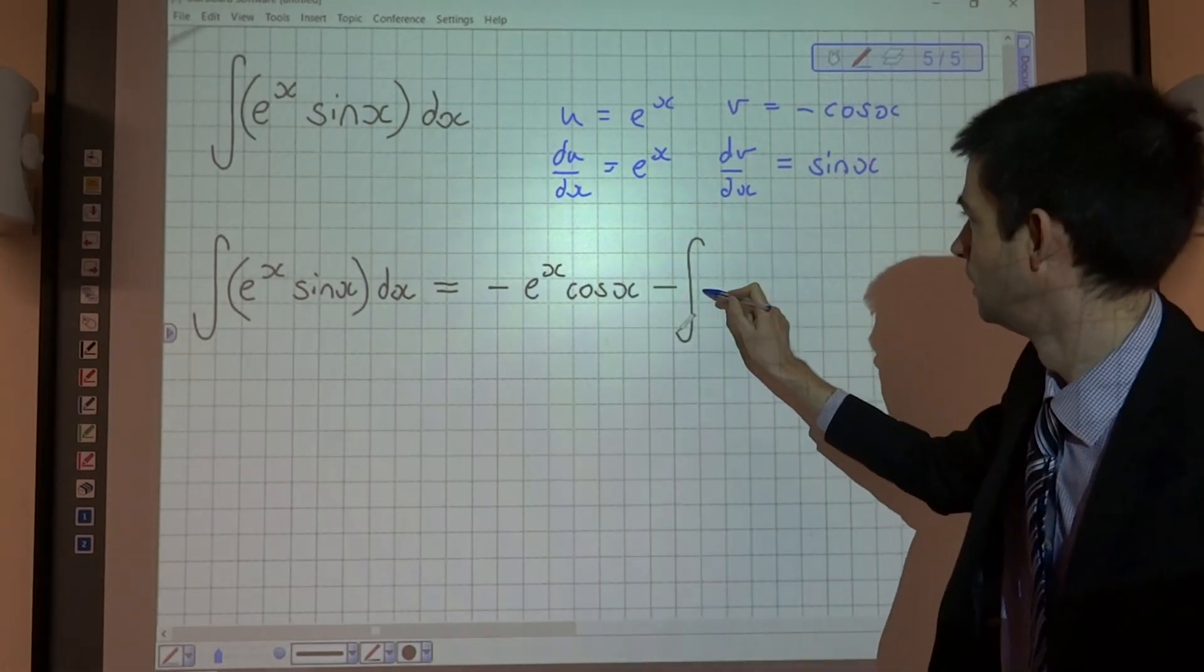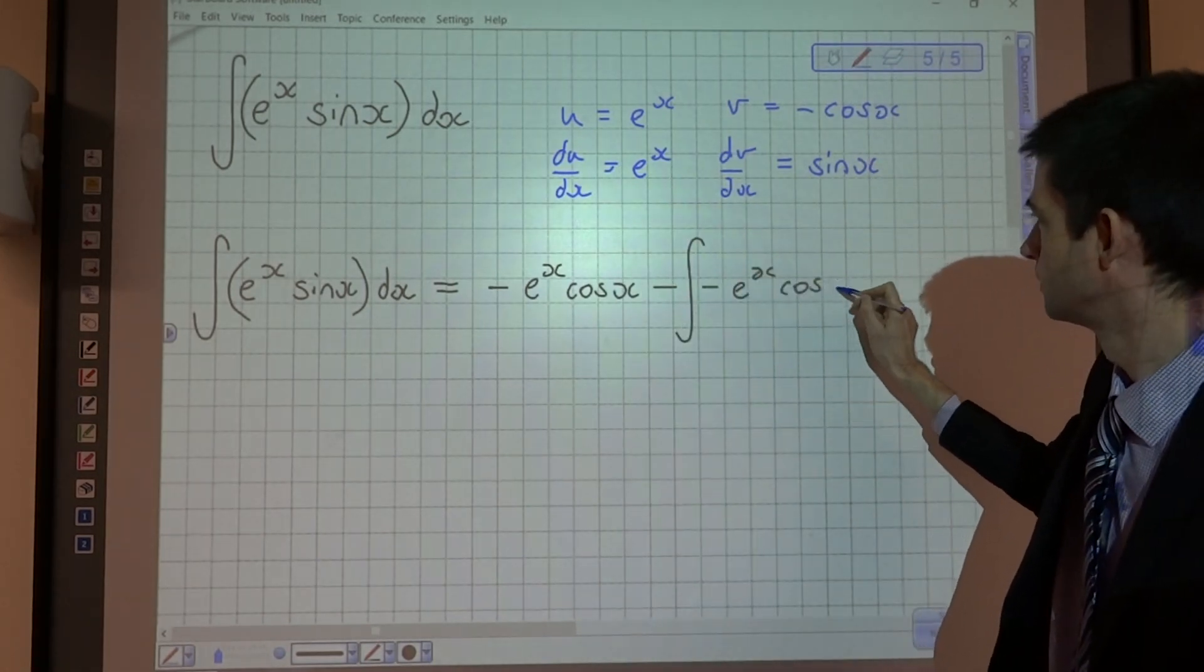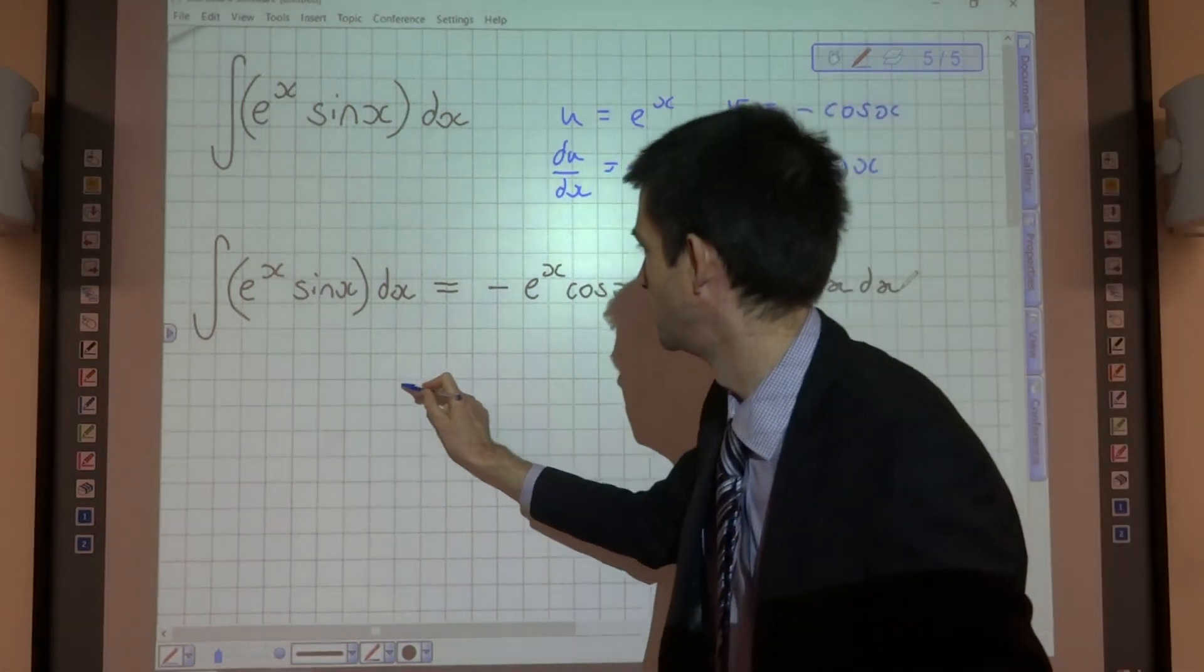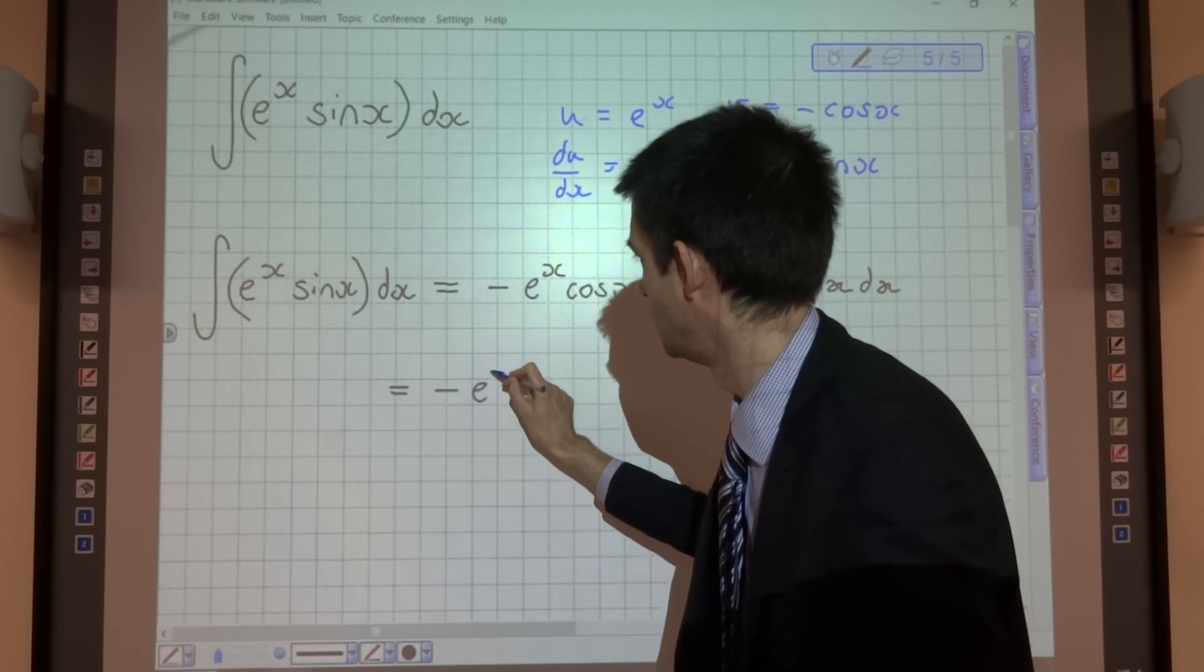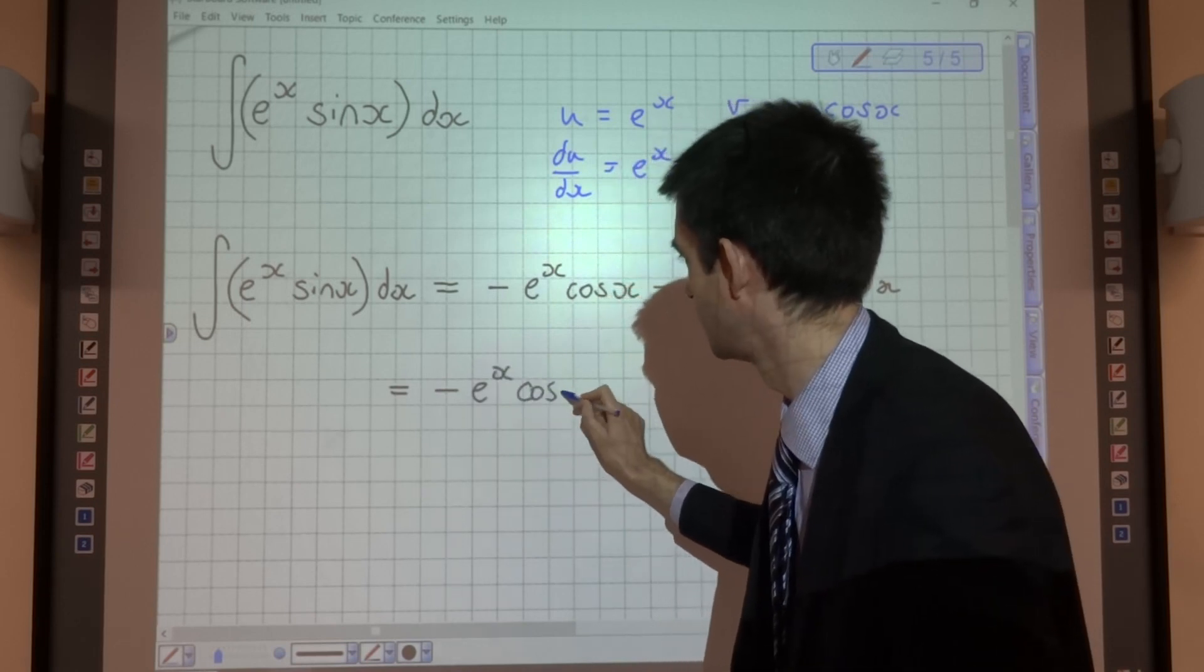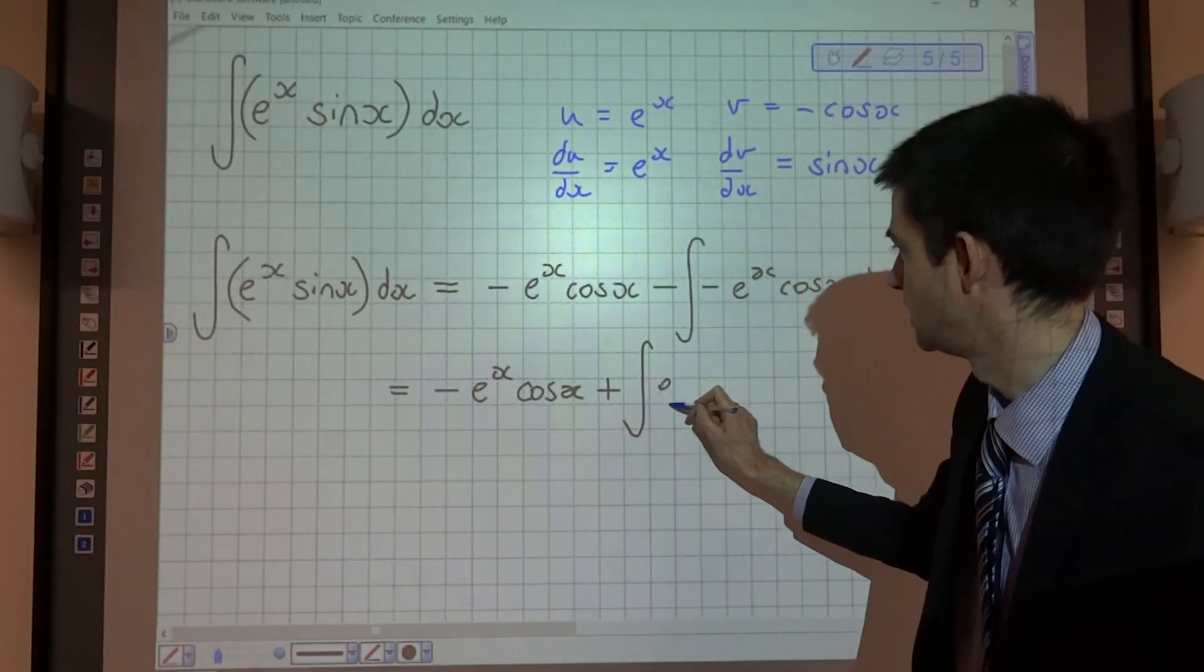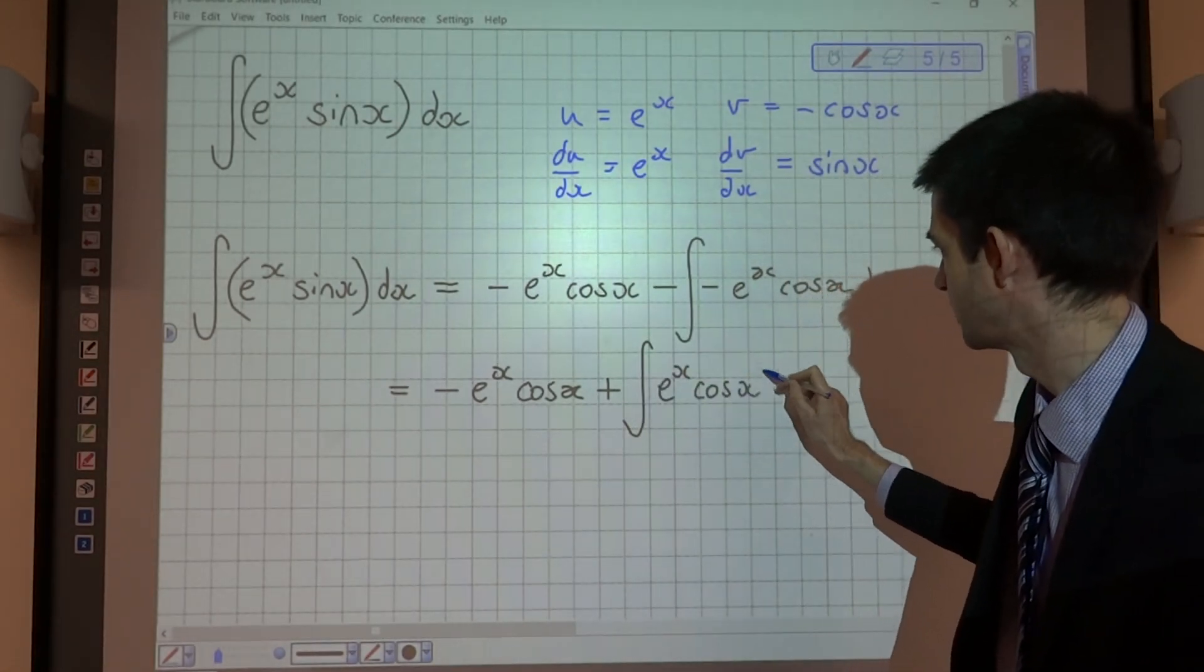So negative e to the x cos x which as we saw in the previous video you can rewrite as negative e to the x cos x plus the integral of e to the x cos x.